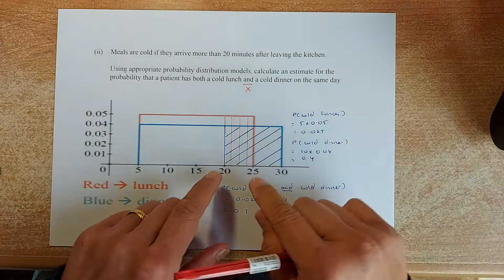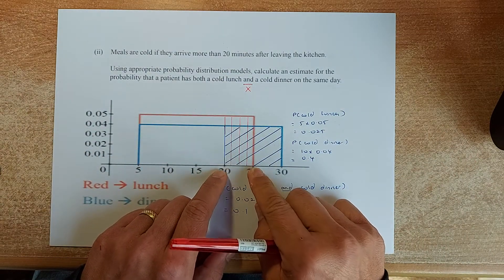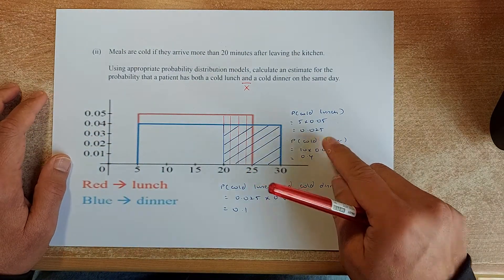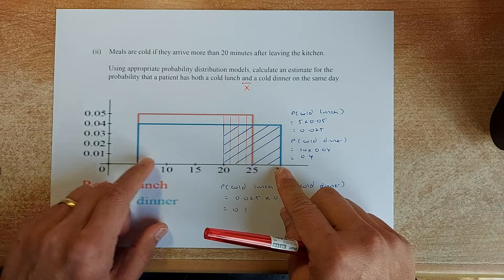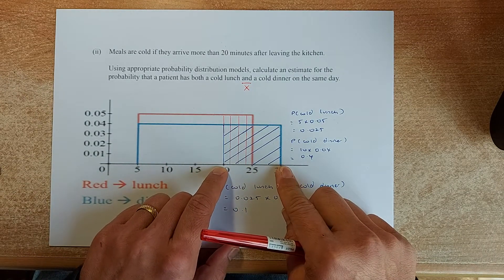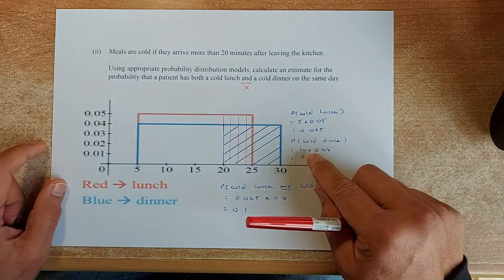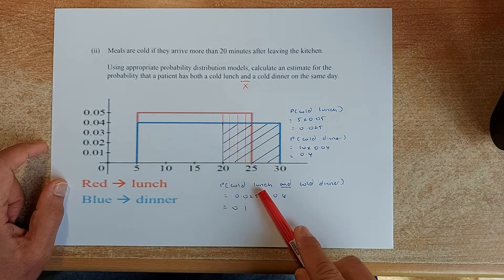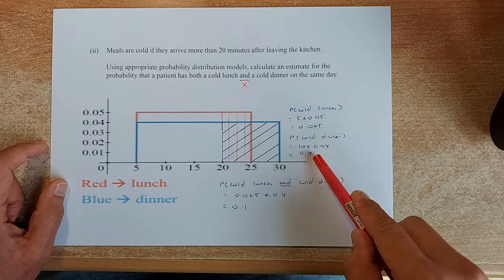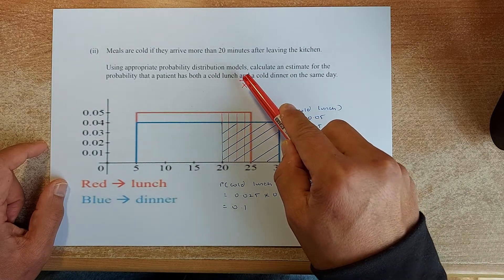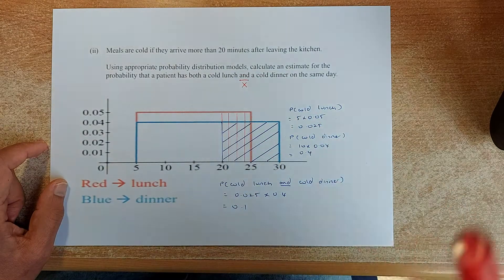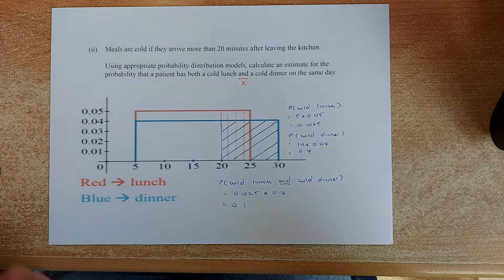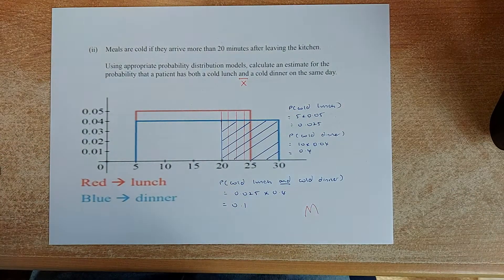Cold lunch, the area is 20 to 25. That is 5. 5 times the height. So 5 times 0.05 is 0.25. For the dinner, which is the blue line, the lateness is 20 to 30. So there will be 10 multiplied by the probability 0.04. So 10 times 0.04 is 0.4. To calculate the probability that they have a cold lunch and cold dinner, take these two numbers and multiply. In probability, if the word AND you multiply, the word OR you add. So this time is the AND. You multiply the two numbers and the answer is 0.1. That will give you a merit in this paper.